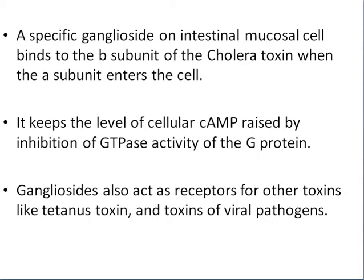Specific gangliosides, such as intestinal mucosal ganglioside, bind to the beta subunit of cholera toxin when the subunit enters the cells, keeping cellular cyclic AMP levels raised by inhibition of GTPase activity of the G protein. Gangliosides also act as receptors for other toxins like tetanus toxin and toxins of viral pathogens.